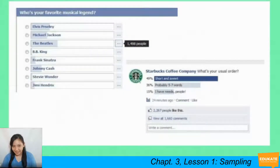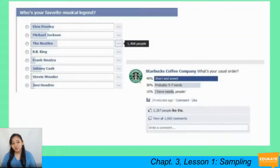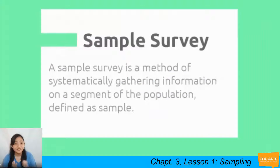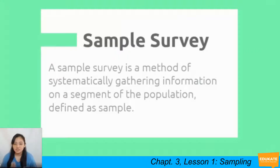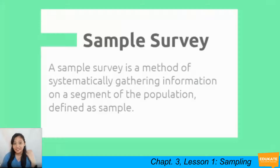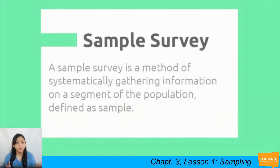You have seen these posts lingering around Facebook, Twitter, Snapchat, and Instagram. These are what we call a sample survey. A sample survey is a method of systematically gathering information on a segment of the population, defined as the sample. From the word itself — sample survey — we survey a sample. So why do we just do surveys on a sample? Why not survey the whole population?